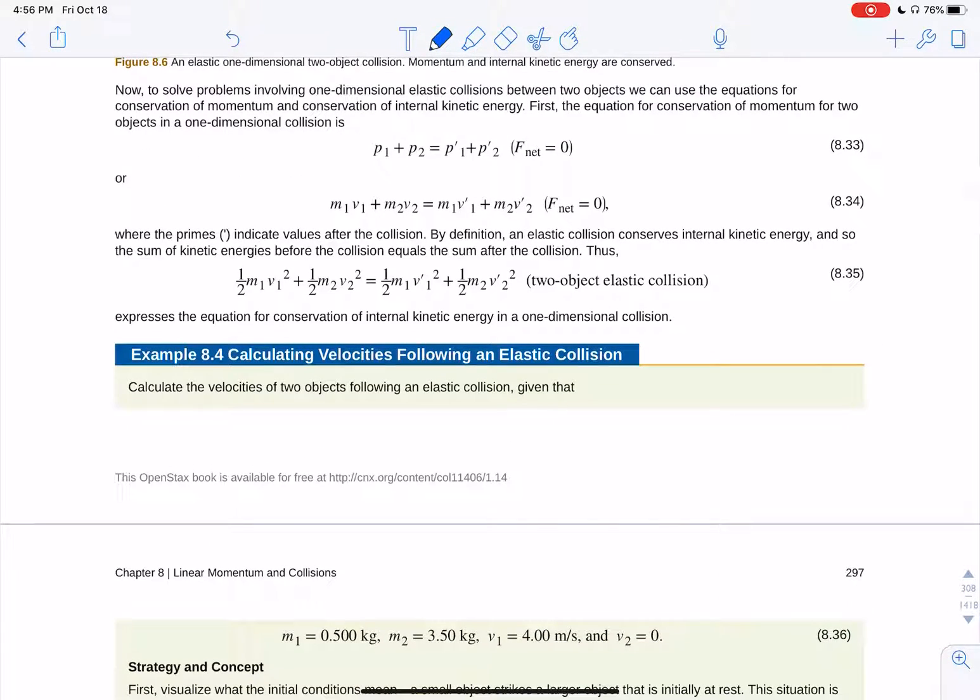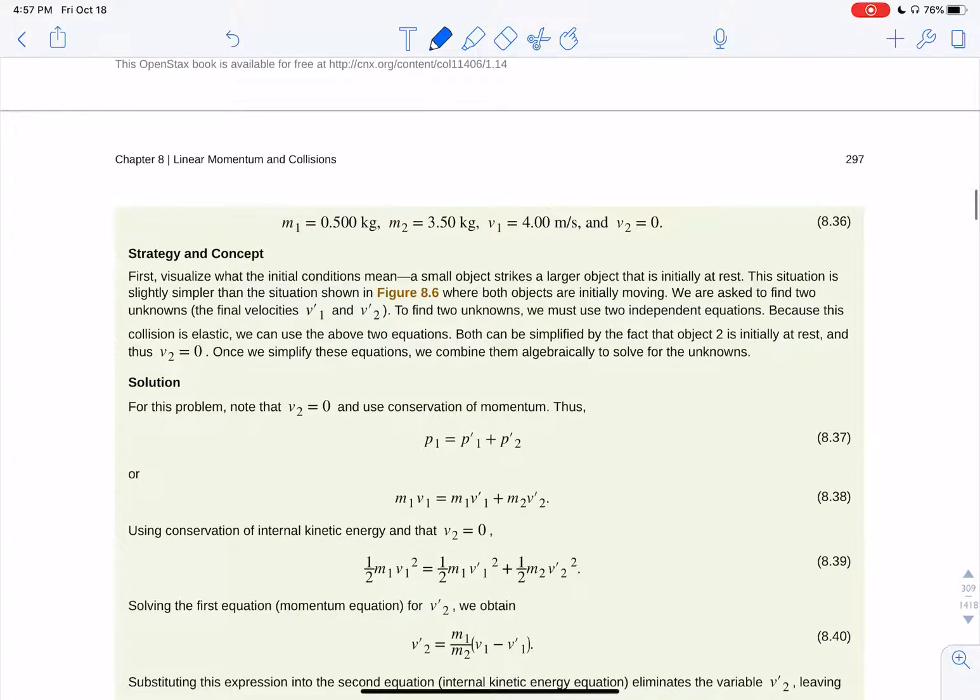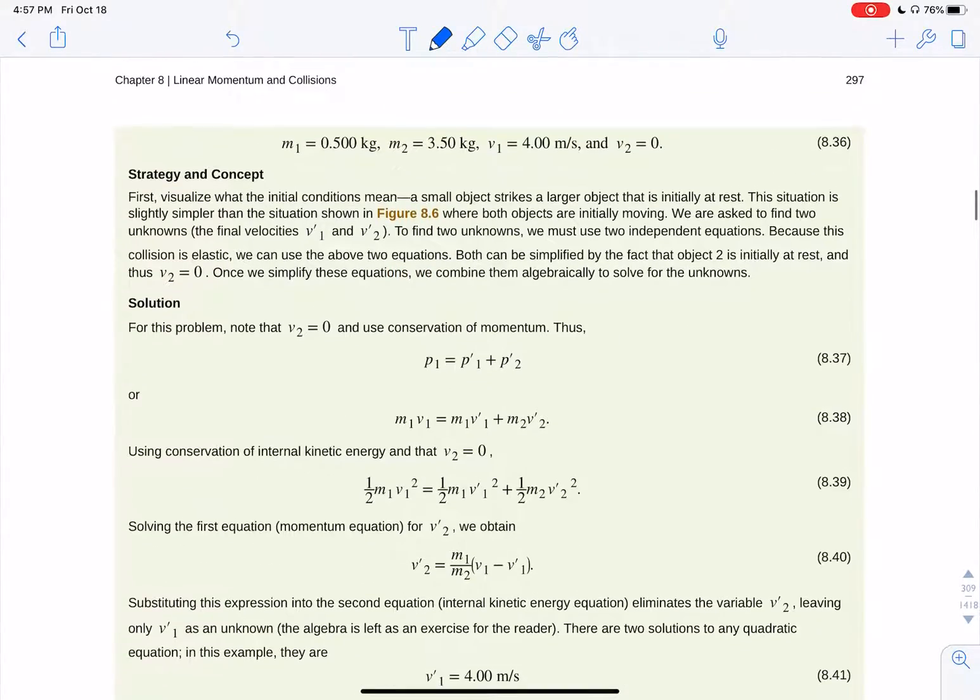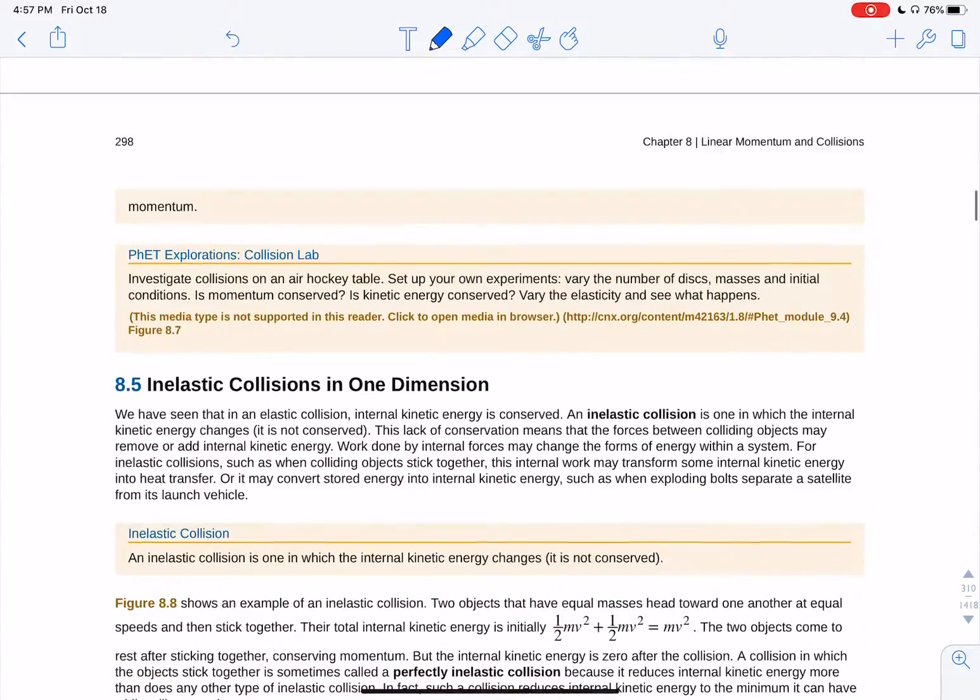But if you know their initial masses and your initial velocities, you can solve for your final velocities using these equations. And if one of them starts at zero, it's a little bit easier. So there's some examples there.